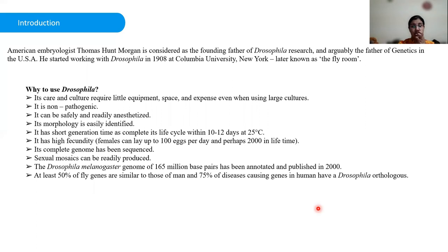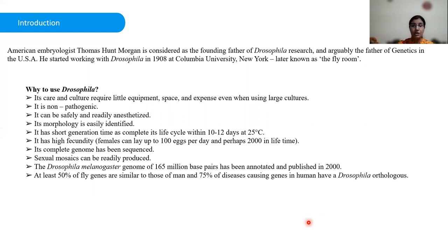The presence of giant polytene chromosomes enables easy localization of genes on specific chromosome regions to develop physical maps and examine gene activity. The practice of freely sharing newly discovered mutants across the world was started by Morgan and continues to date. It is internationally agreed that Drosophila can be sent across the world through postal services, and well-established stock centers in different countries greatly facilitate the exchange of new genetic resources globally.